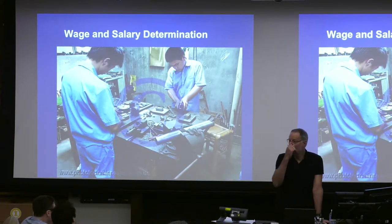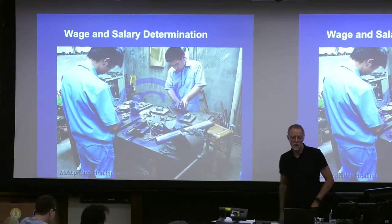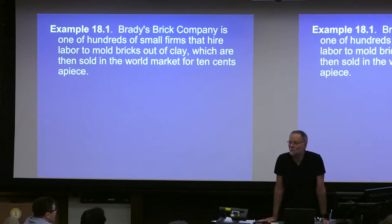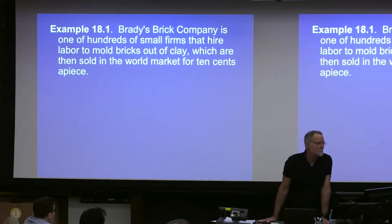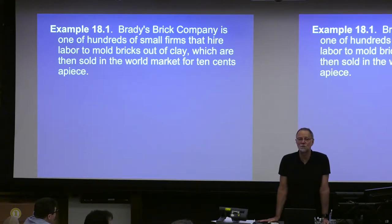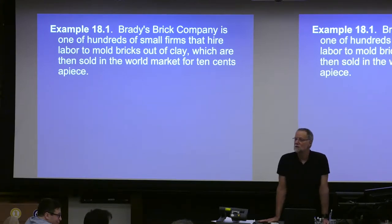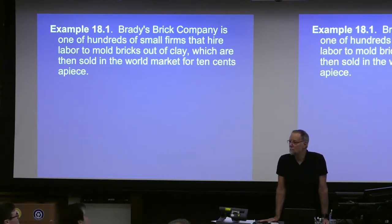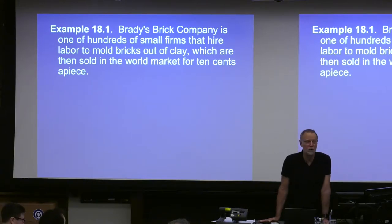Why do people get paid what they're paid according to economic theory? Let's consider the very simplest situation. We've got a brick-making company. The company itself doesn't really do anything — the workers do it. The workers go get clay out of an inexhaustible clay pit, mold the clay into bricks, set them out to dry and bake in the hot sun. Over the course of days they cure and become finished bricks. A company comes and picks them up and leaves a deposit of 10 cents per finished brick with the firm.